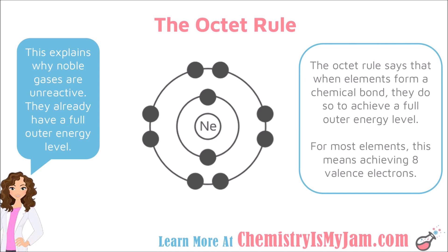We will begin with the octet rule. The octet rule says that when elements form a chemical bond, they do so to achieve a full outer energy level. For most of our elements, that means they want 8 electrons, which is why we call this the octet rule. Neon is an example of an element that is already satisfied — it has 8 electrons in its outermost energy level, meaning it has a full outer energy level. Neon is a noble gas.